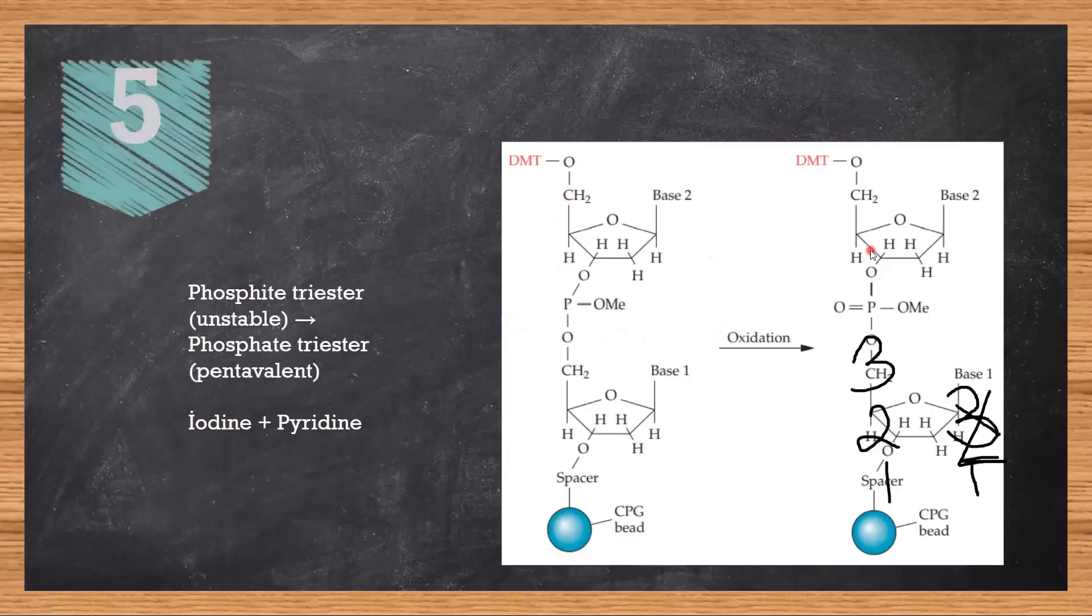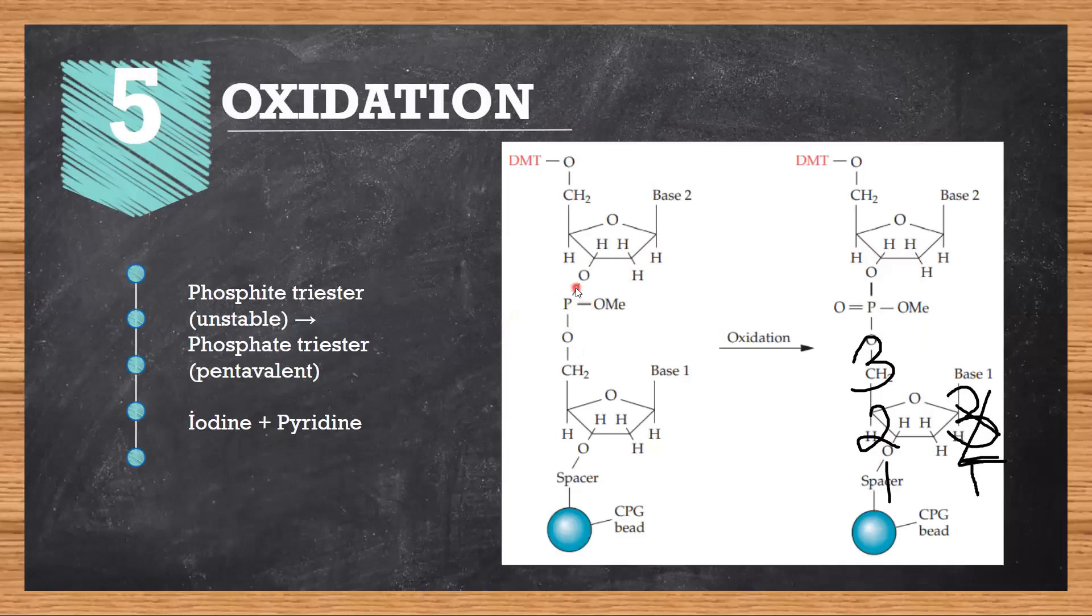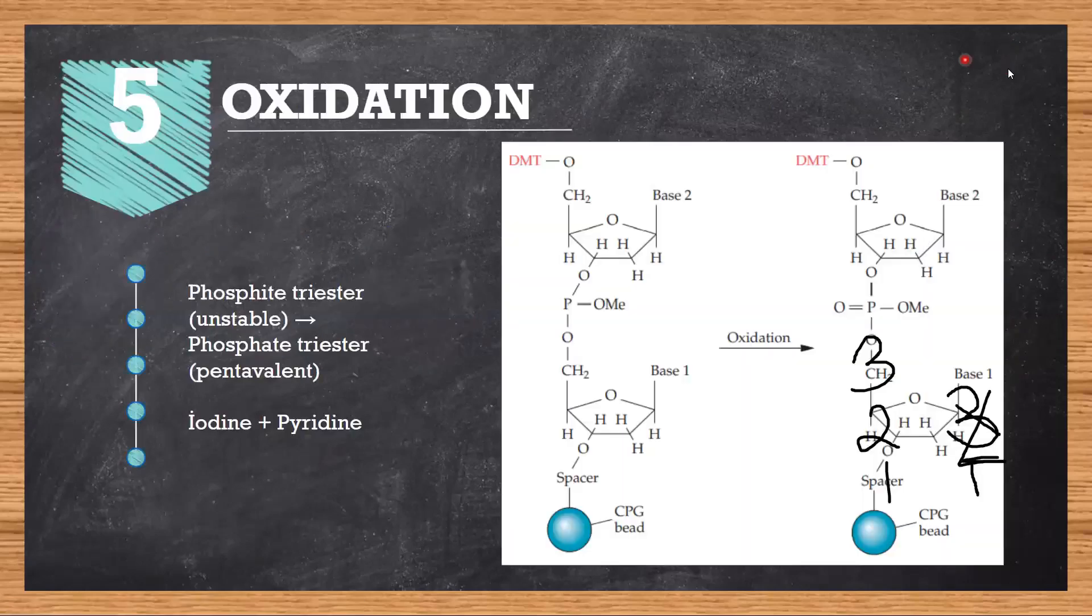Following the capping, this linkage, can you see it's a triester linkage, which is highly unstable because phosphorus is pentavalent. To convert this unstable linkage into a stable linkage, we need to oxidize it.